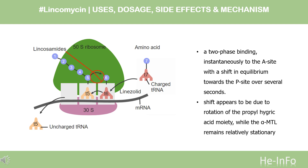Detailed investigations into the mechanism of the related lincosamide clindamycin suggested a two-phase binding: instantaneously to the A-site with a shift in equilibrium towards the P-site over several seconds. This shift appears to be due to rotation of the propylhygric acid moiety, while the alpha-MTL remains relatively stationary. Recent crystal structures of lincomycin in complex with the 50S ribosomal subunit of Staphylococcus aureus show that the alpha-MTL moiety forms hydrogen bonds with C-2611, A-2058, G-2505, A-2059, and G-2503 of the 23S-rRNA, while the propylhygric acid moiety interacts only through van der Waals contacts.